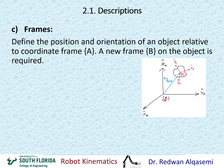We have frame A with axes XA, YA, and ZA, and we have an object here. We attach a frame B to this object — frame B has axes XB, YB, and ZB. We need to define frame B: both position and orientation of frame B relative to frame A.